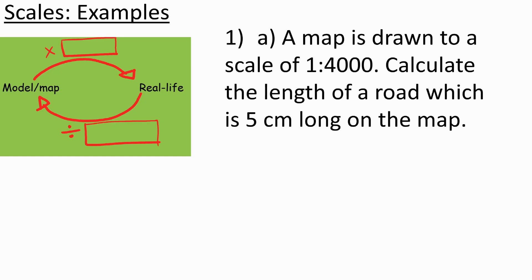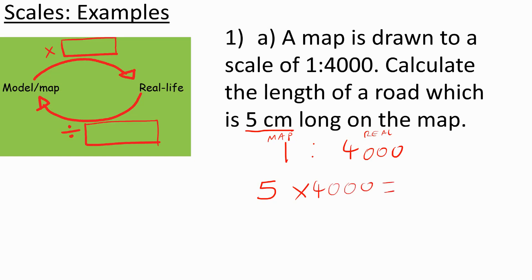We want to work out the length of a road which is 5 cm long on the map. We have a scale of 1 to 4,000, so 1 cm on the map is 4,000 cm in real life. I would need to do 5 times 4,000: 5 times 4 is 20, so we have 20,000. The units are still cm, so to convert to metres I divide by 100, giving me 200 metres.